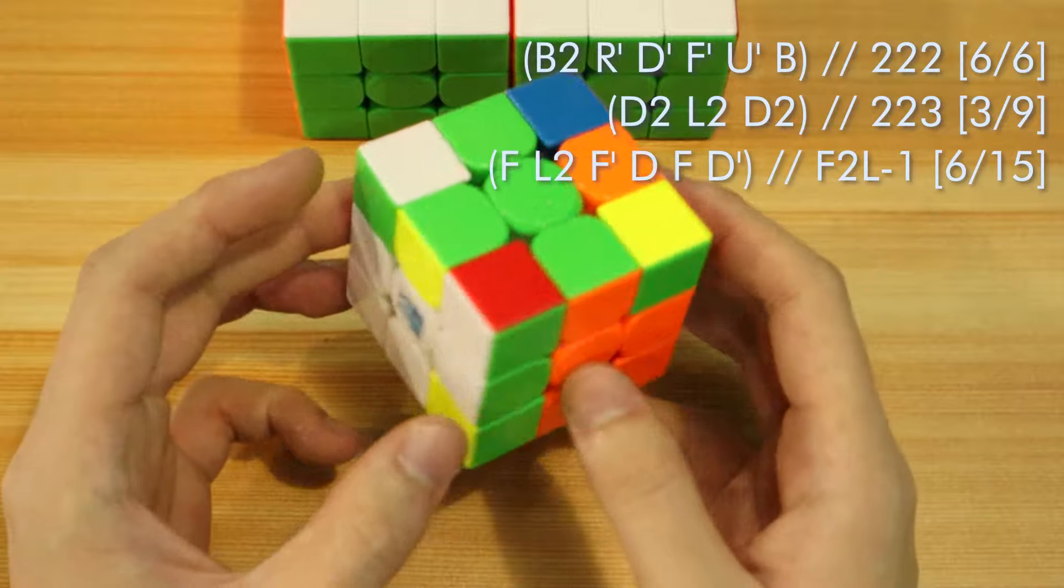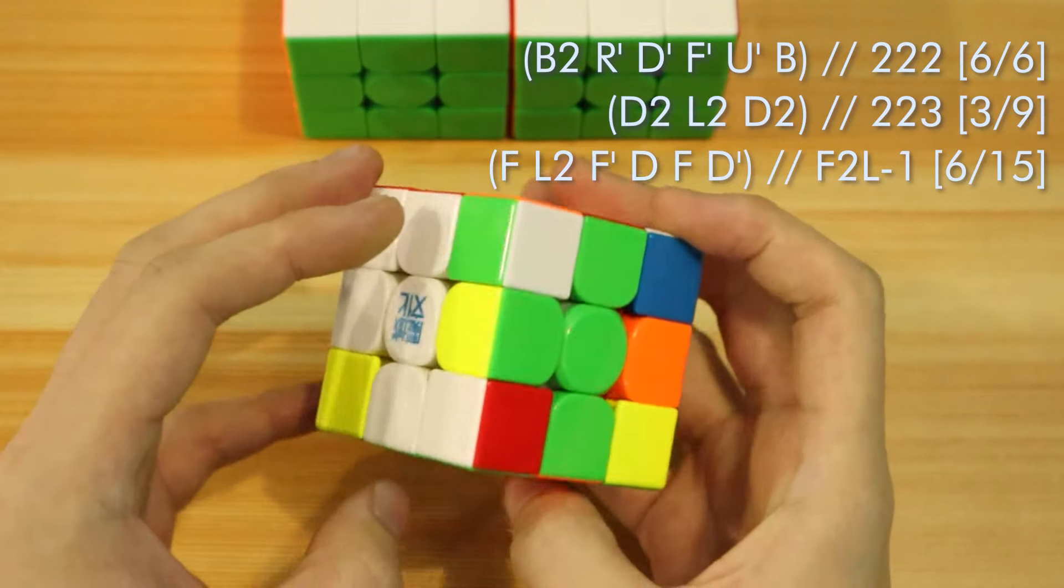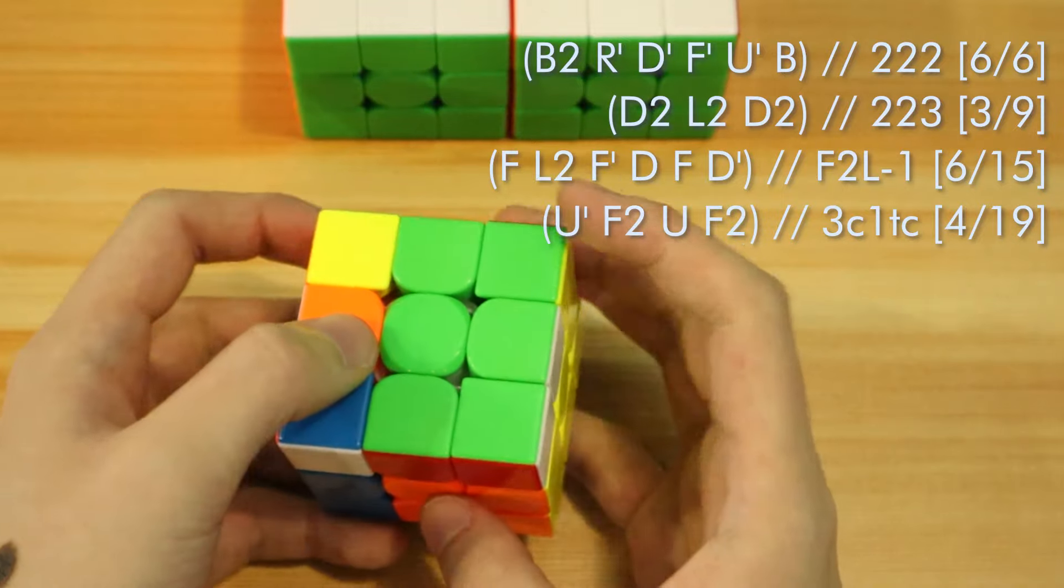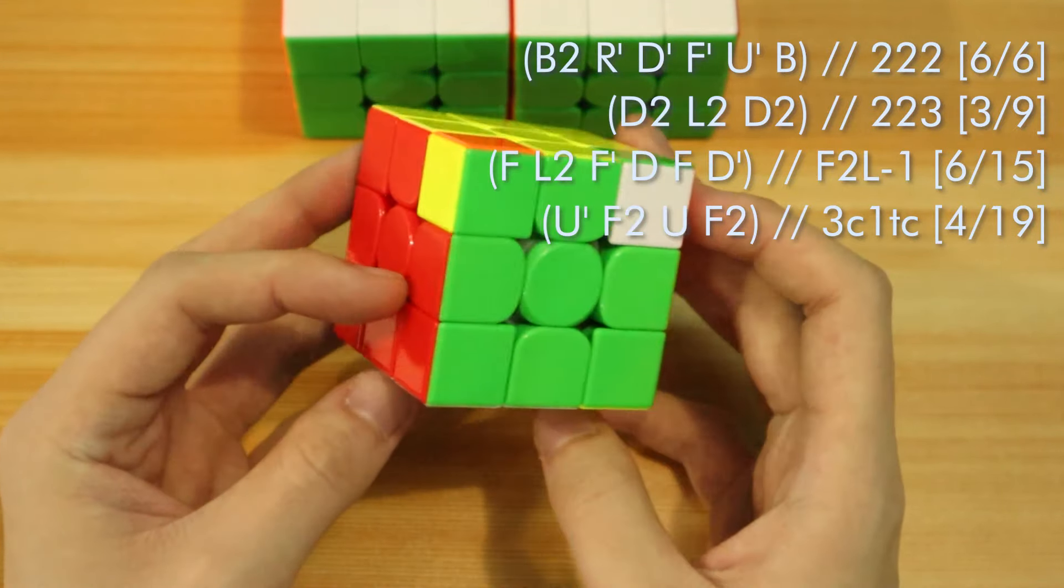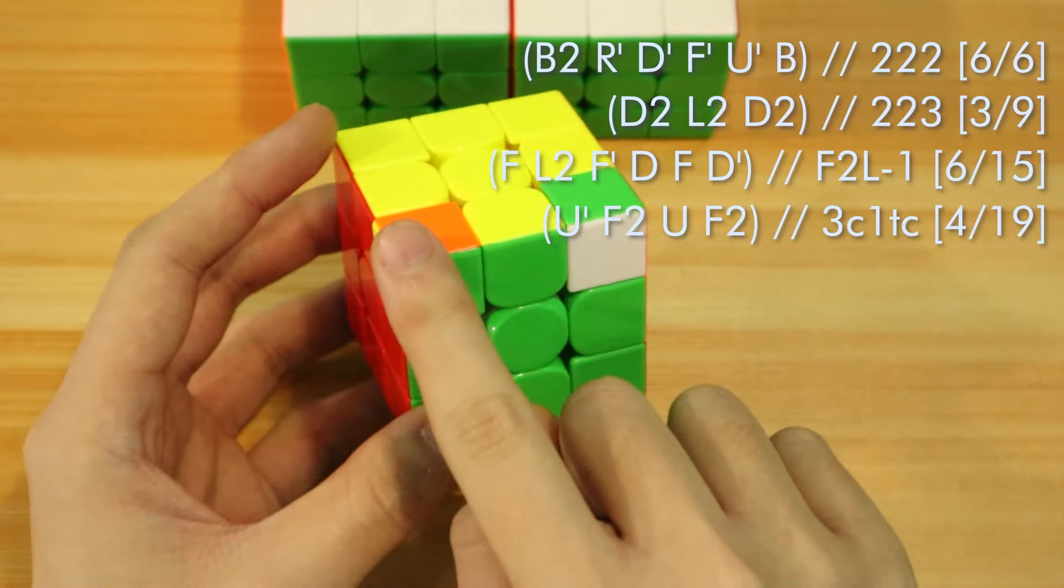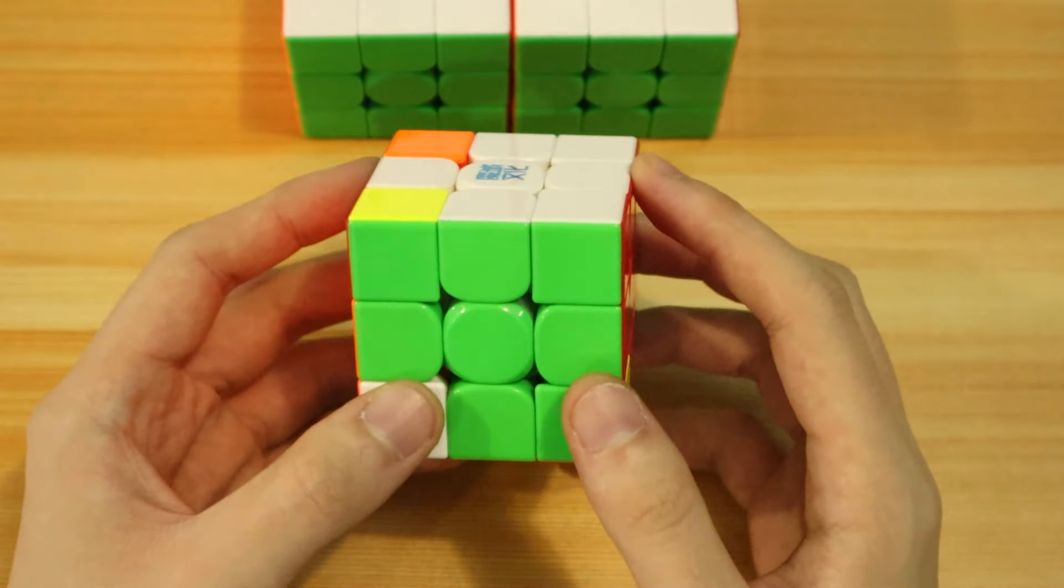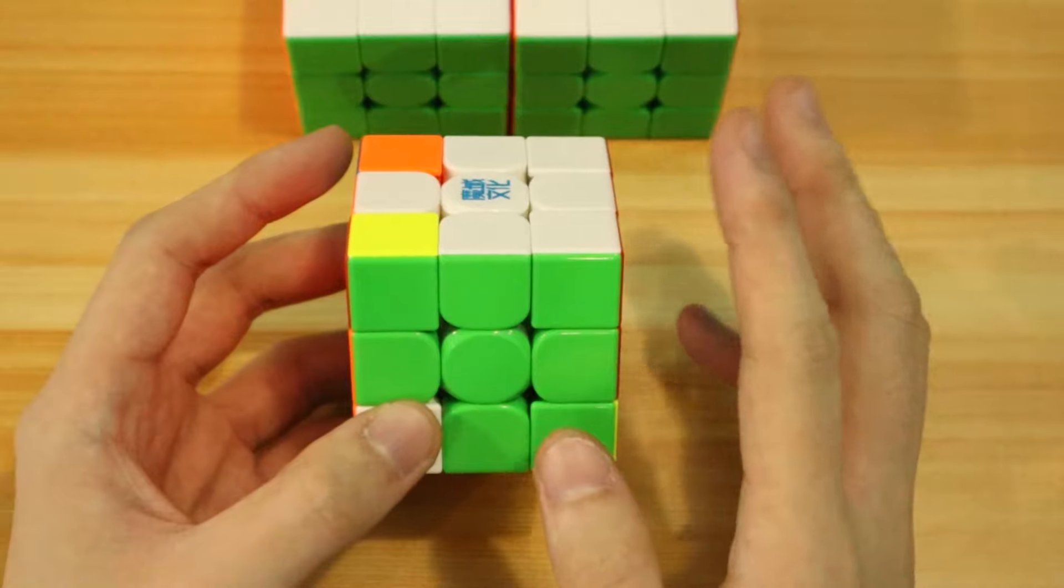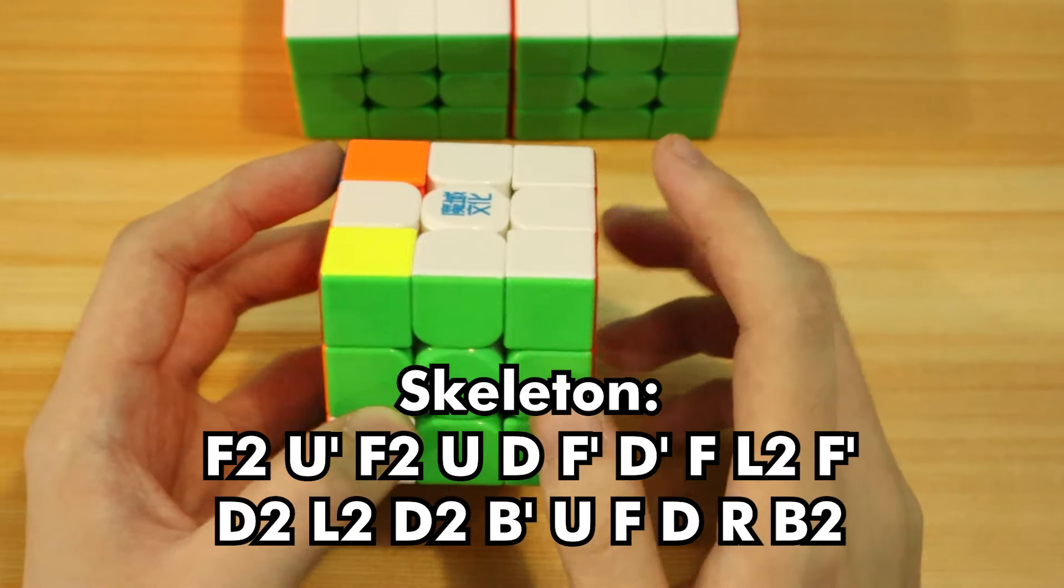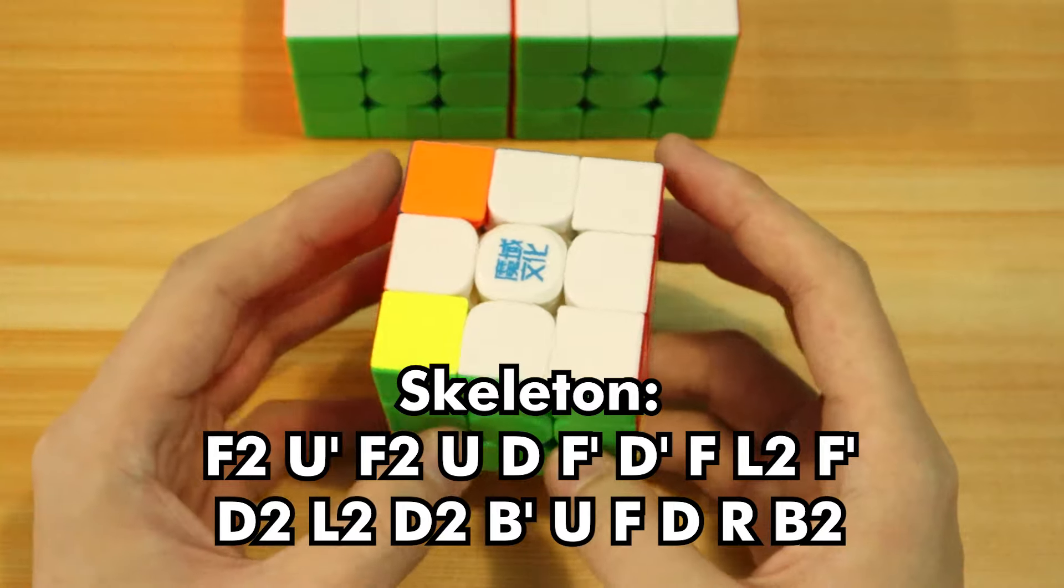Then from here, I could finish into a skeleton perhaps by inserting this edge and pairing up with this block. So that is a U' F2 U, and that leaves us with a 3c 1tc case. So there's three corners to solve and one corner to twist. So I determined that this would require around two insertions. So I was just hoping to cancel as much moves as possible, especially given that this skeleton was done in around 19 moves. And I just went into the insertions after this.